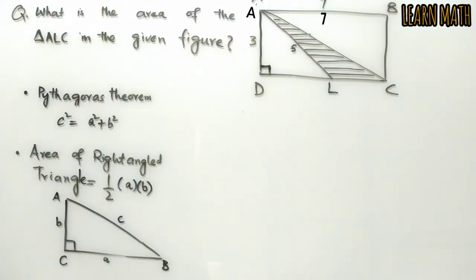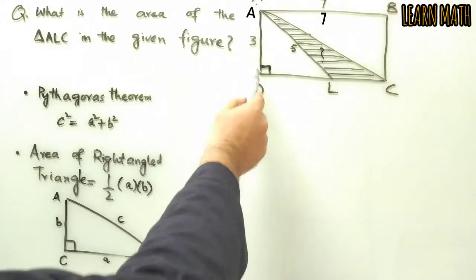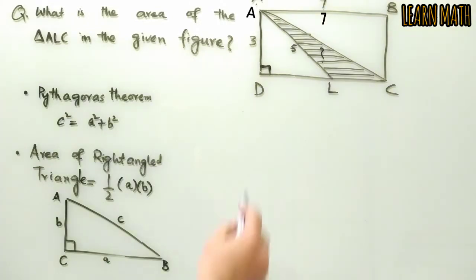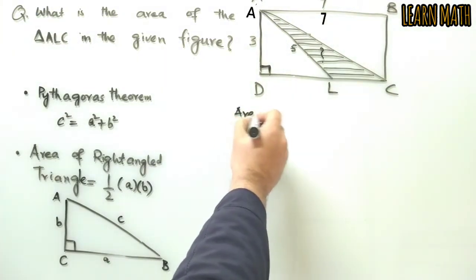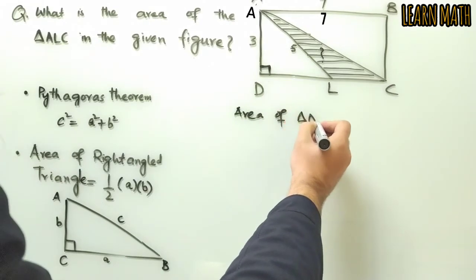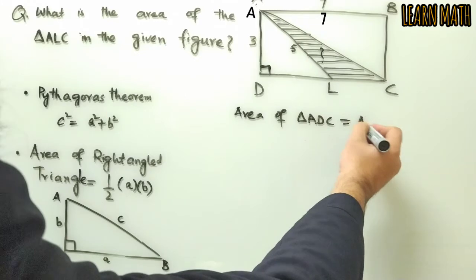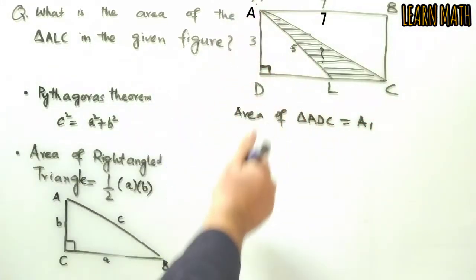Now we have to calculate the area of this triangle. First, we will calculate the area of triangle ABC, and this is A₁.